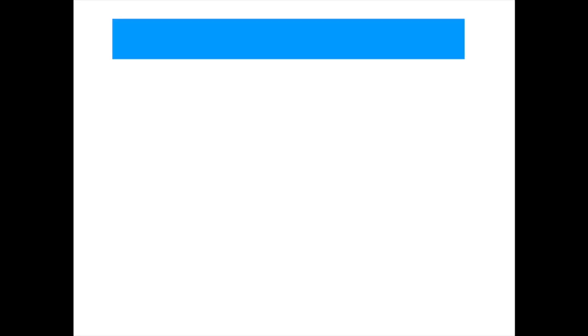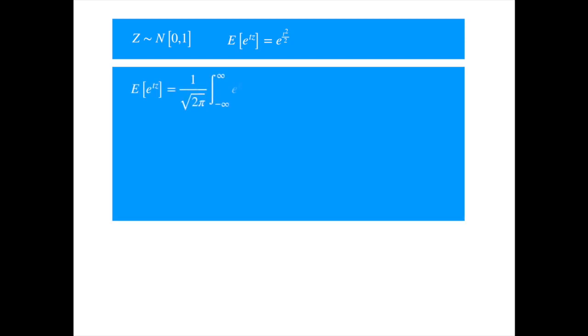Before we start, it is helpful to recall the formula for the moment generating function of a normal variable. This is because the moment generating function is more or less the expected value of the exponential of the variable — and so is the solution of the geometric Brownian motion. Recall that if z is standard normal, then its moment generating function is as follows. It can be easily derived by noting that the expected value of a function of a standard normal variable is the integral of the function times the density of the standard normal.